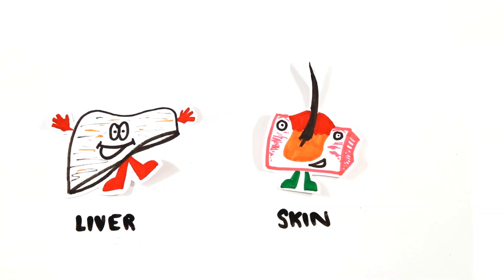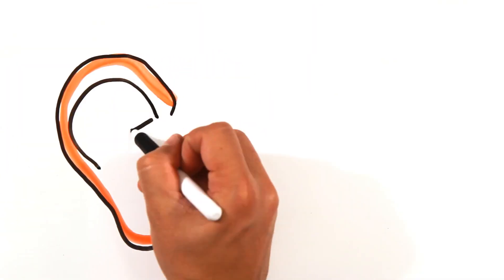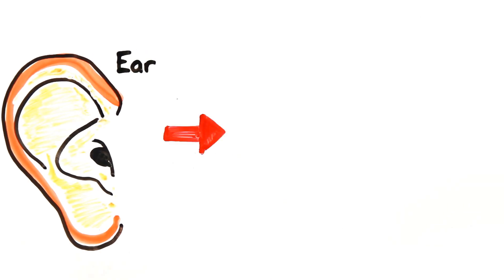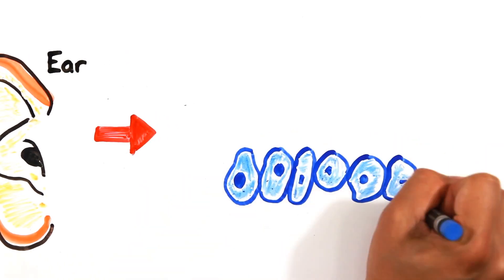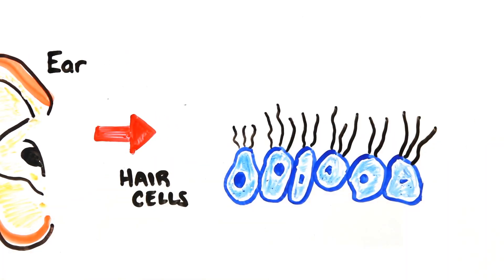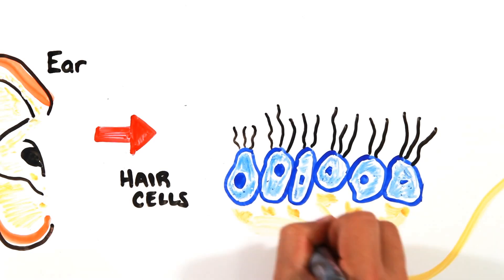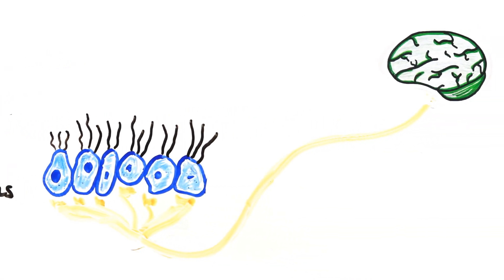Unlike other organs such as the liver or skin, the inner ear does not have the capacity to regenerate. In your ear, there are thousands of tiny nerve cells called hair cells. These are responsible for picking up different frequencies and sending the signal to the brain where it's processed.